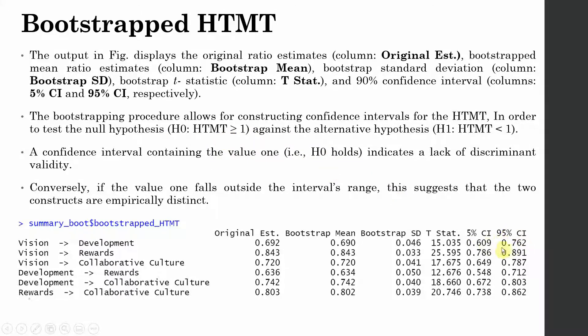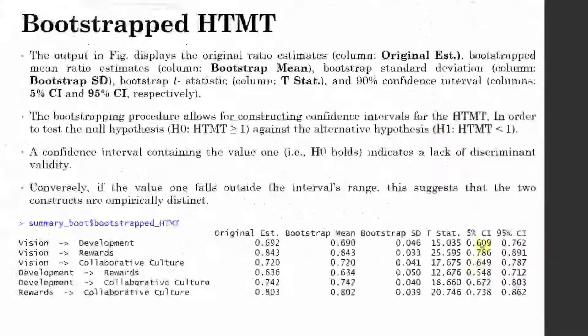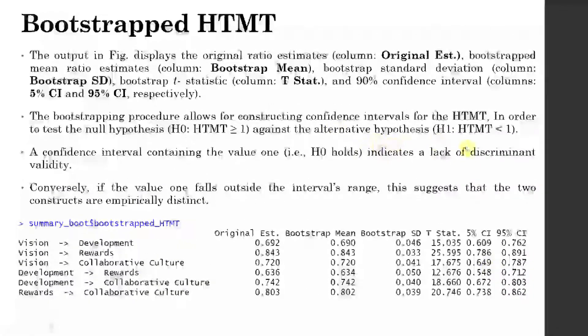No. There is no 1 here. Does one fall in between these values? No, the one does not fall in between these values. This indicates that your alternative hypothesis is substantiated. And you reject your null hypothesis. And this indicates there are no issues of discriminant validity.